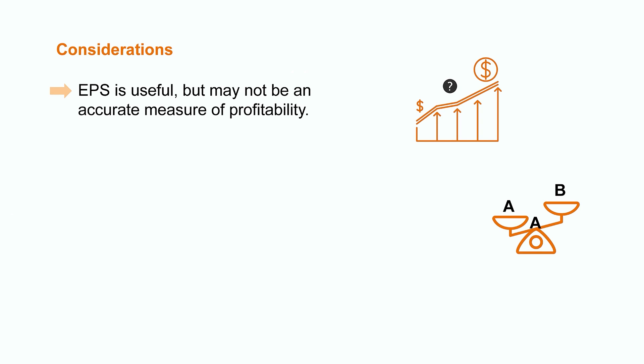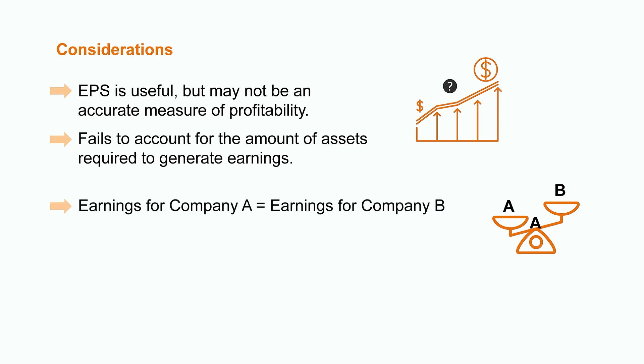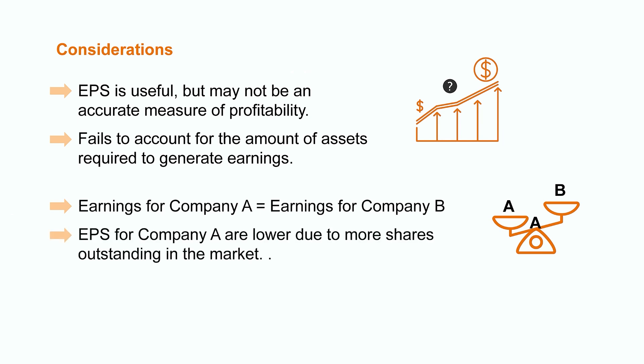While earnings per share can be an extremely useful ratio, it does receive some criticism around whether it's an accurate measure of profitability. The ratio tells us about earnings but fails to account for the amount of assets required to generate those earnings. For example, two companies with the same EPS figure will differ in overall profitability if one needed to invest in substantially more assets. It can also be challenging to compare companies using EPS — Company A and B could have the same overall earnings but show very different EPS figures simply because Company A has more shares outstanding, thereby reducing its EPS result.